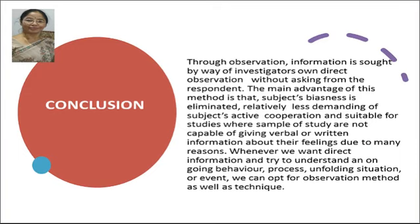In conclusion, in true observation, information is sought by way of the investigator's own direct observation without asking from the respondents. The main advantage of this method is that subject biasness is eliminated. It is relatively less demanding of the subject's active cooperation and suitable for studies where the sample are not in a position to express themselves verbally or in written form. Whenever we want to have direct information and understand an ongoing behavior, situation, process, unfolding, or any event, or want to have deeper information, we can opt for the observation method as well as technique. I hope you have some basic idea about observation method and technique.